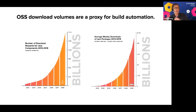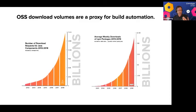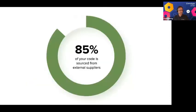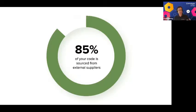We look at these downloads as a proxy for the amount of build automation we're seeing, which means DevOps has taken root. A modern application can be as much as 85% open source components. The State of the DevOps Report found that high-performing companies were using a much bigger mix of open source components versus proprietary code.